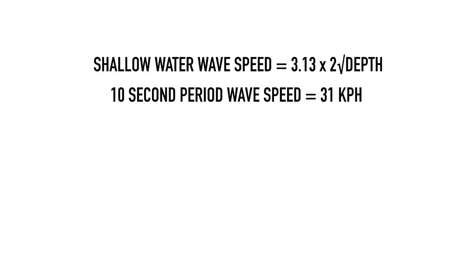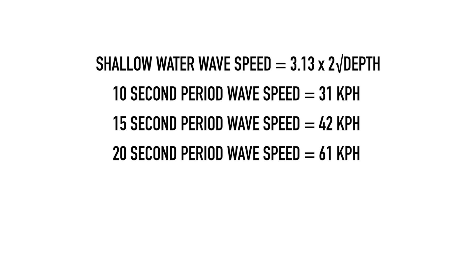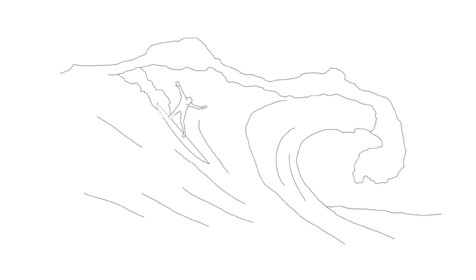A 15-second period wave in 14 meters depth will be traveling at 42 kilometers per hour, and a 20-second period wave in 30 meters of depth will be traveling at 61 kilometers per hour. So it's no wonder big wave boards need to be big, to allow for higher paddling speed.